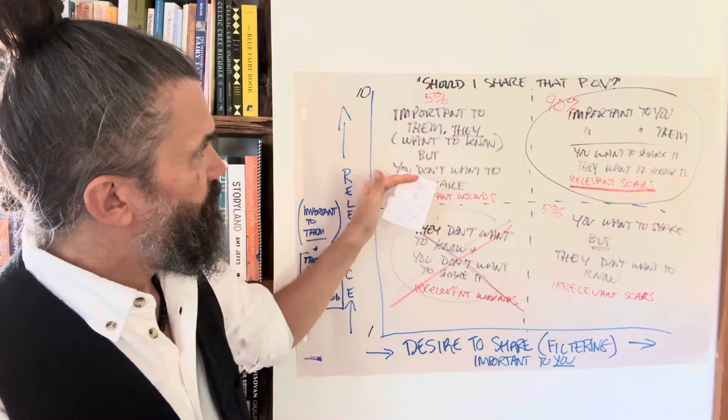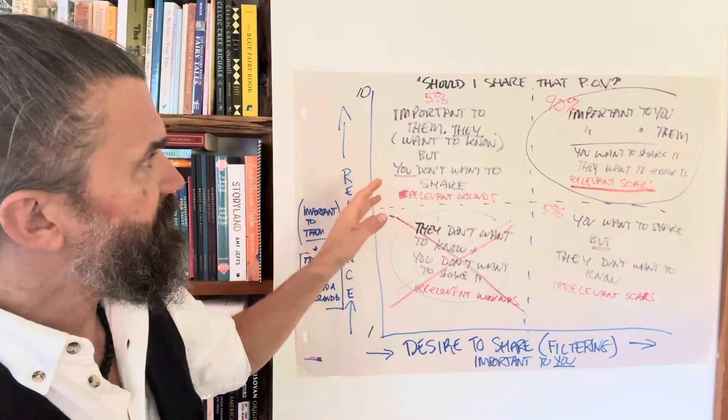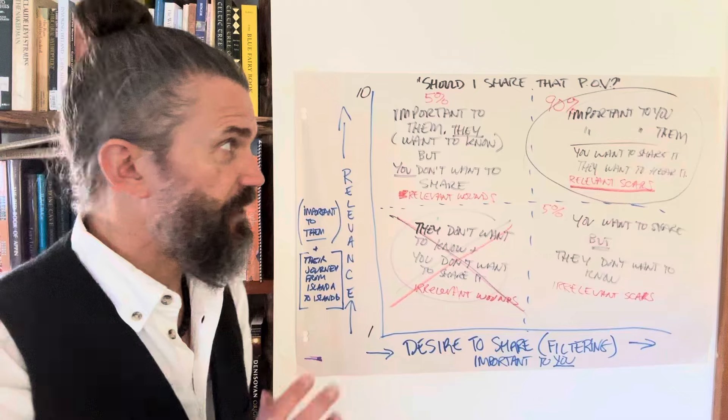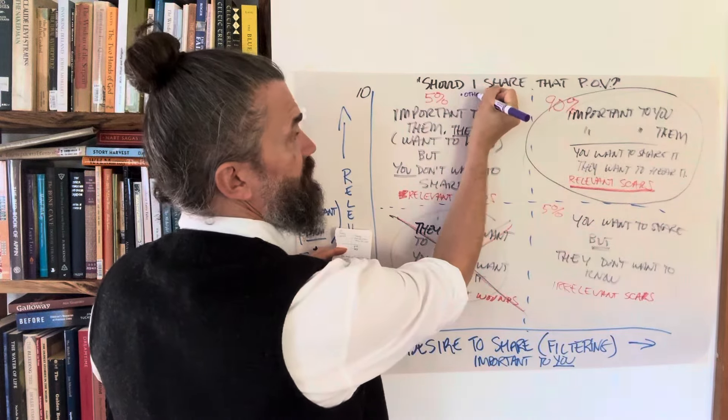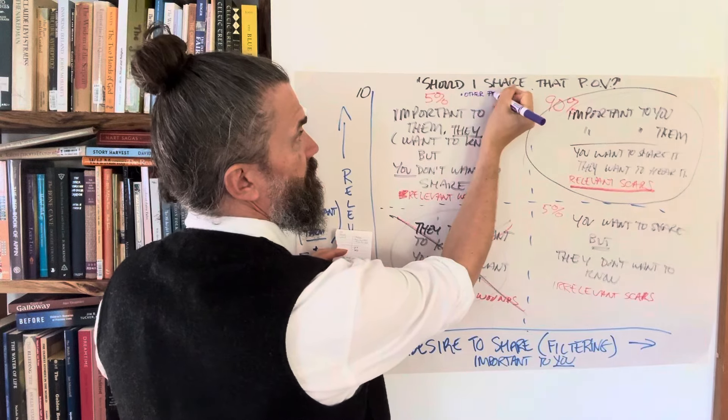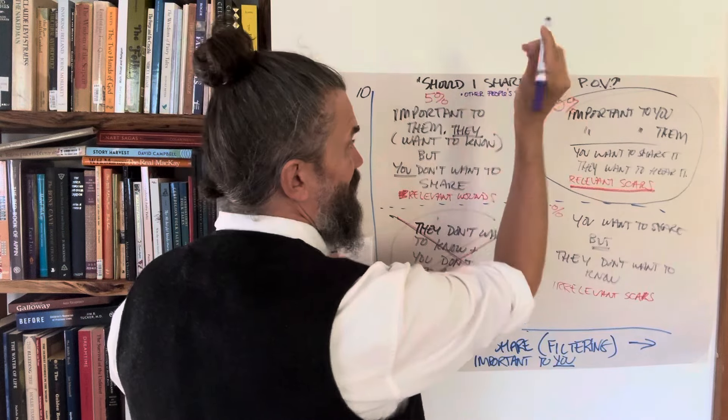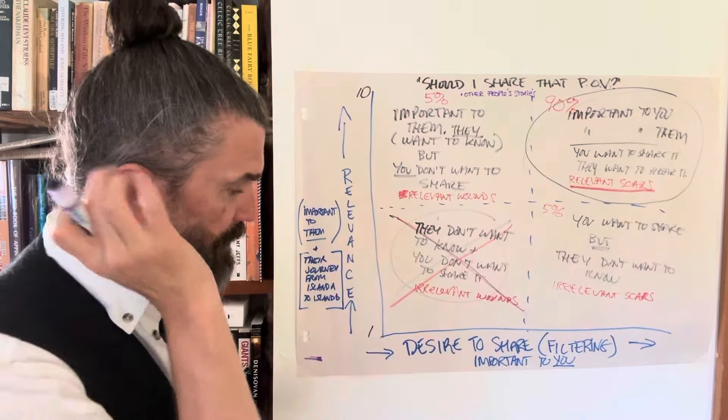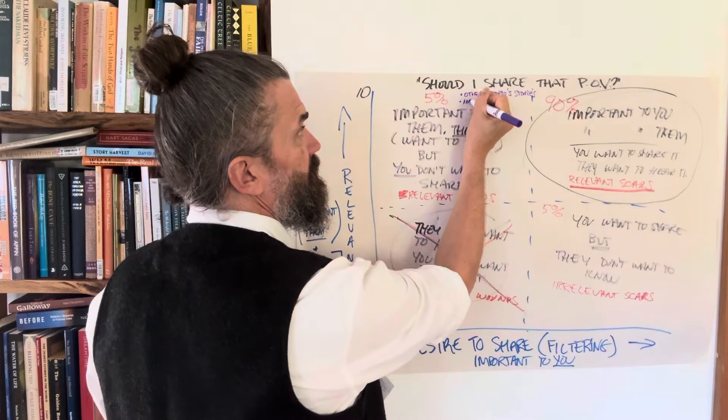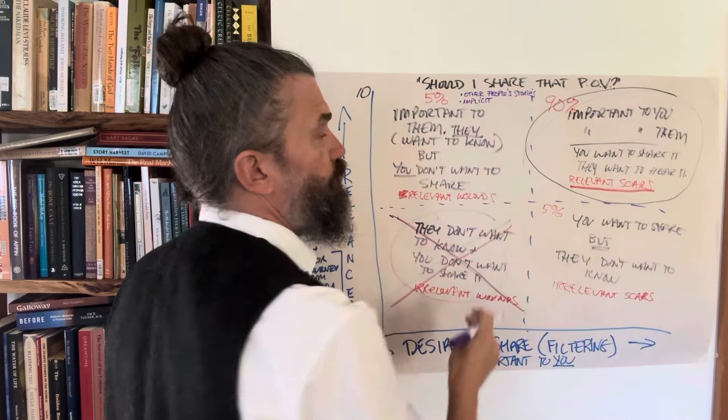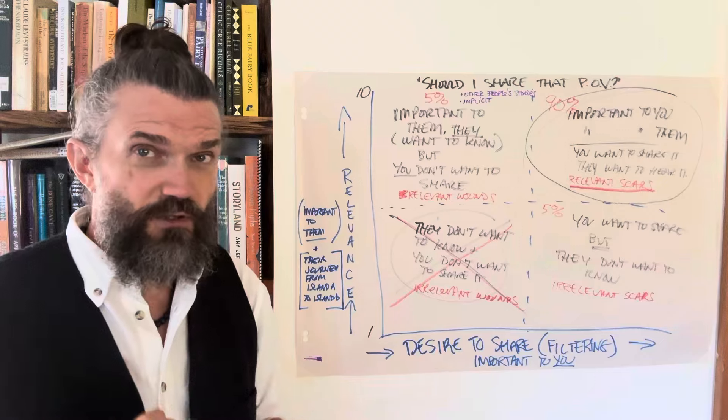So I just wanted to write it down here on the map, on this chart. The things that are important to them that they want to know, but you don't necessarily want to share. One of the ways you can deal with this is other people's stories. So case studies, other examples from other people. Also, it's good to know that this can be sort of implicit, meaning you can write from an experience without writing about your own personal experience.